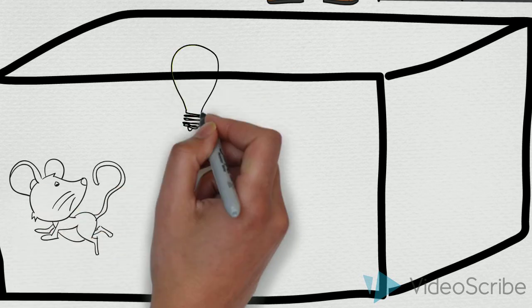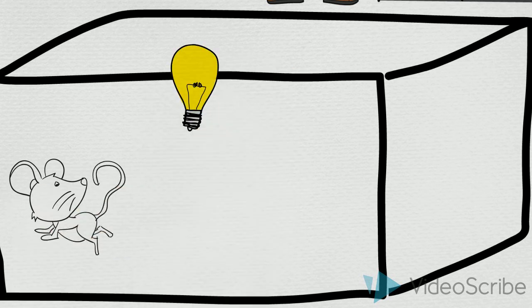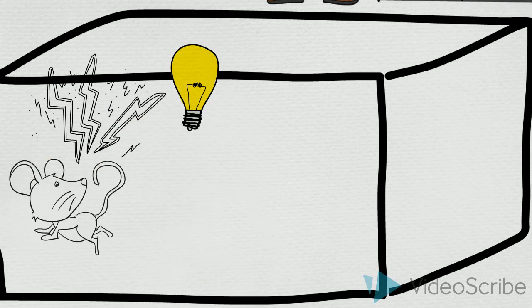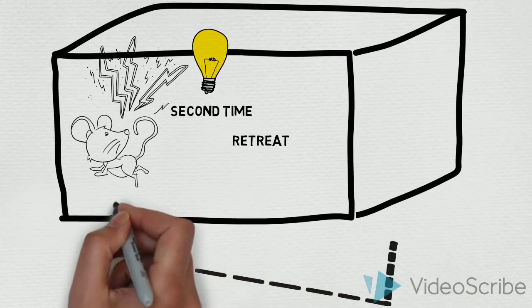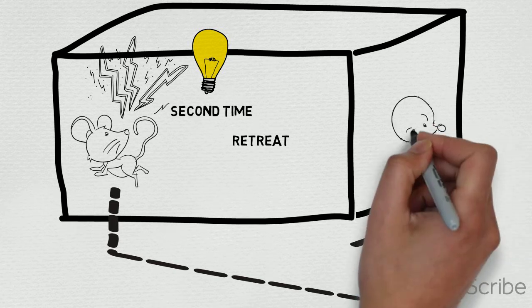For example, when laboratory rats are exposed to light and subsequently given an electric shock, once the light is flashed again, the rats will engage in fidgeting, trembling, and retreat to the corner of the cage. This reaction is also found in humans.